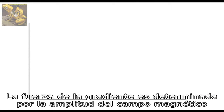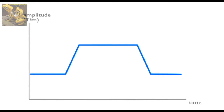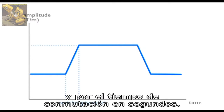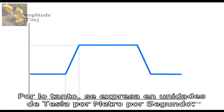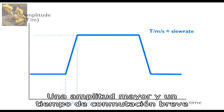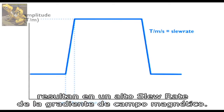The strength of the gradients is determined by the amplitude of the gradient magnetic field, measured in Tesla per meter, and by the switching time in seconds. It is therefore expressed in units of Tesla per meter per second — the slew rate of the gradient system. Higher amplitudes and shorter switching times result in a higher slew rate of the gradient magnetic field.